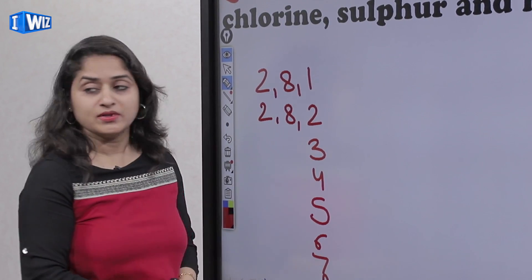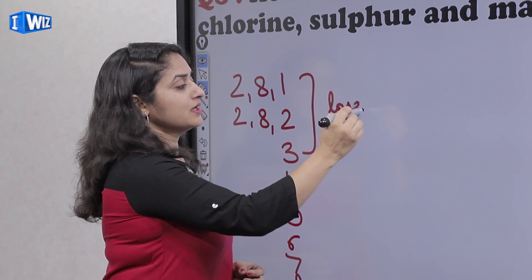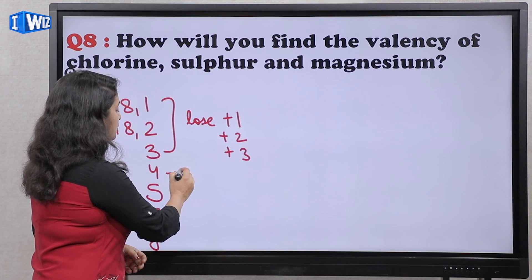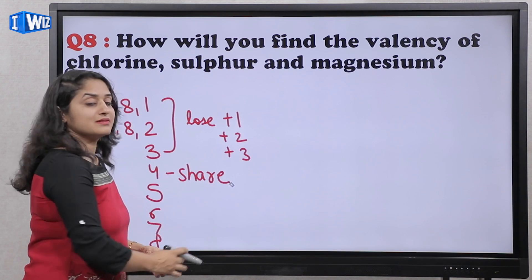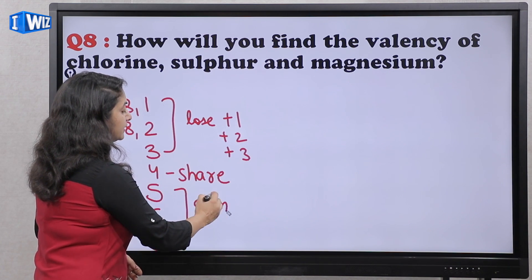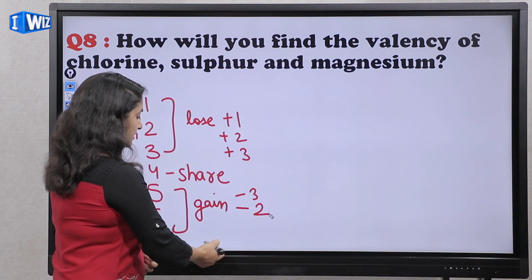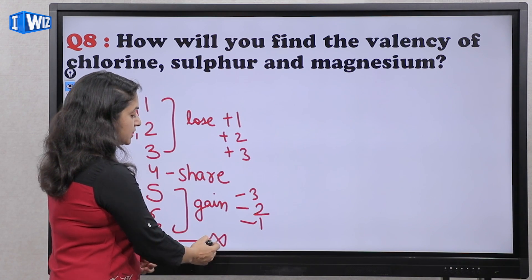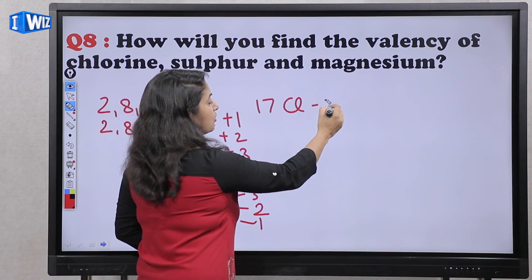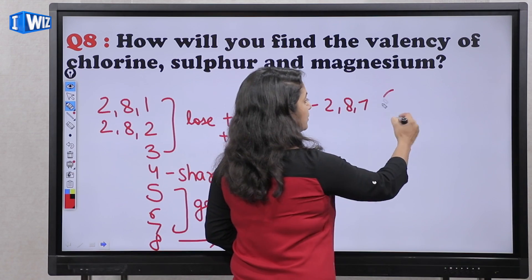Next question is about valency. Jis ke paas first shell mein do electrons hai, woh unko lose karke positive charge obtain karenge plus one, plus two, plus three. Jis ke paas four electrons hai, woh share karta hai. Or jis ke paas five, six, seven electrons hai, woh gain karaga. Gain kitne karaga taa ki us ke paas eight hoja hai total. Jis se five wala three gain karaga, six wala two gain karaga, seven wala one gain karaga. Isme agar hum chlorine dekhen, that is seventeen, uski configuration hai two, eight, seven. Toh octet se siraf ek electron kam hai, toh uski valency hui one.